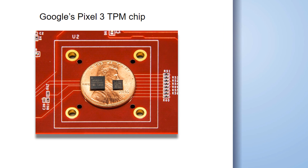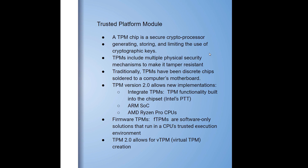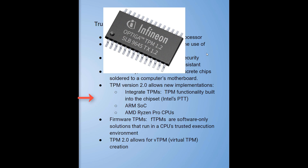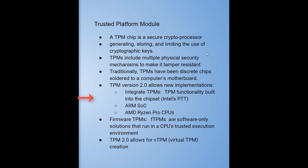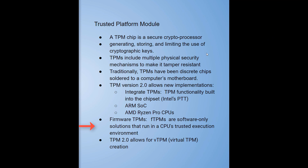Here's an example of Google Pixel 3's TPM chip — you can see it compared to a penny. A TPM is a secure crypto processor. It generates, stores, and limits the use of cryptographic keys. TPMs include multiple physical security mechanisms to make them tamper resistant. With TPM version 2.0, new ways of implementing TPM emerged: into a chipset, a system-on-a-chip such as ARM SoCs, AMD Ryzen Pro CPUs with TPM built into the CPU, firmware TPMs — software-only solutions running in a CPU's trusted execution environment — and virtual TPMs.